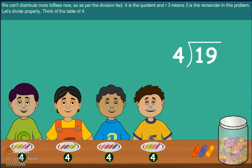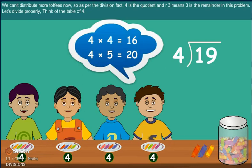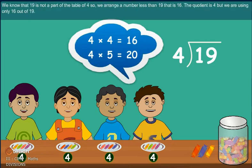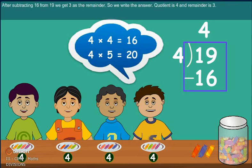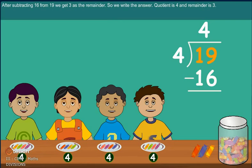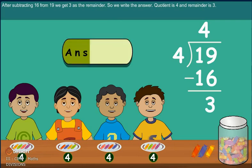Let's divide properly. Think the table of 4. We know that 19 is not part of table 4. So we use a number less than 19, that is 16. The quotient is 4. But we are only subtracting 16 from 19. After subtracting 16 from 19, we get 3 as remainder. So we write the answer: quotient is 4 and remainder is 3.